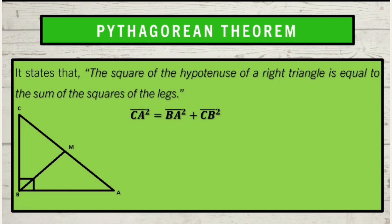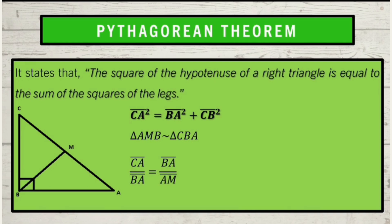Next, write the proportions including the geometric means of the legs. Let us get the proportion of triangle AMB and triangle CBA, and determine the corresponding sides of the legs. We have side CA is to side BA. The corresponding side in the second triangle is side AM. So we have side BA is to side AM, giving us: side CA is to side BA equals side BA is to side AM.